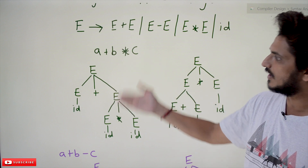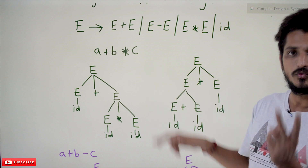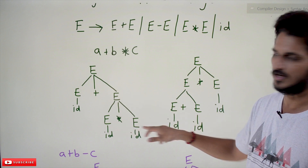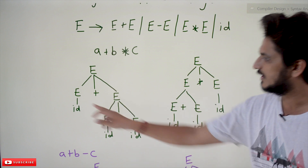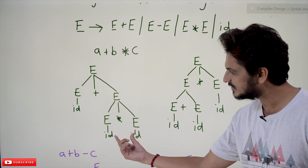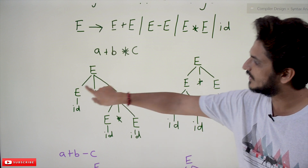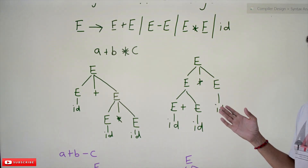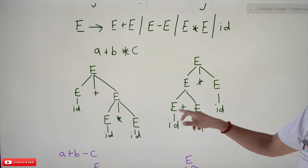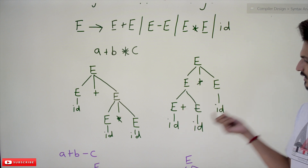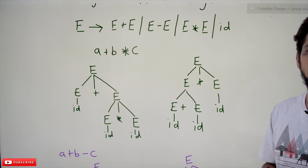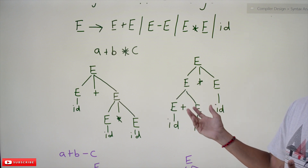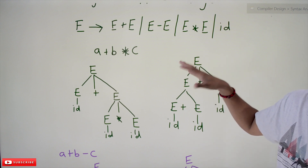If you use this ambiguous grammar and want to evaluate this expression, we are having confusion — this can be done in two ways. First way: E tends to E plus E, then E tends to E star E, with id, id, id — so A plus B star C is given as input and we go with E plus E first. But we can also do it like this: E tends to E star E, then E tends to E plus E, with id, id, id — so A plus B is done first, then multiplication is applied. Ambiguous grammar is not good for compilers. The expression is evaluating in two different ways; we have to follow some standards — that is the point you have to understand.